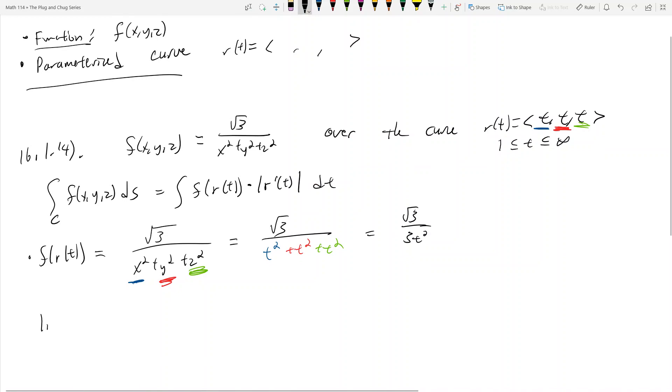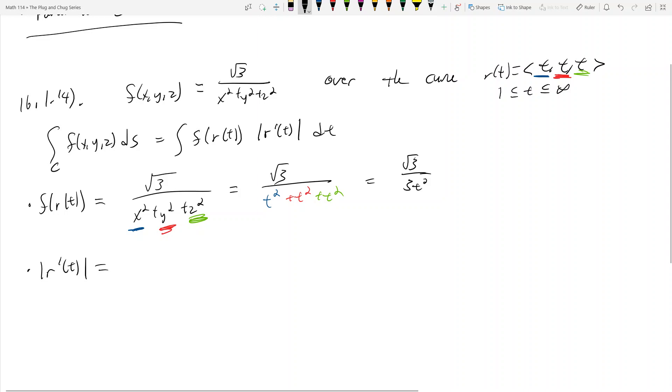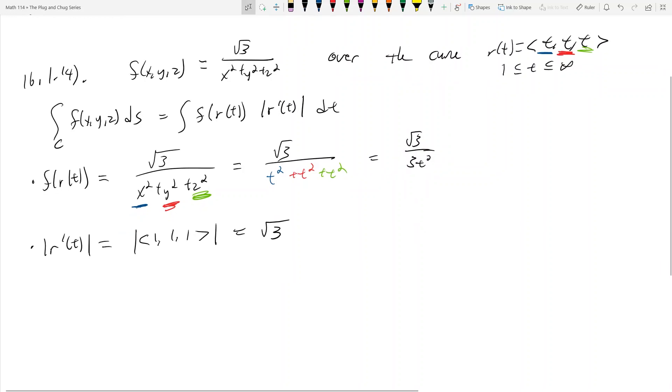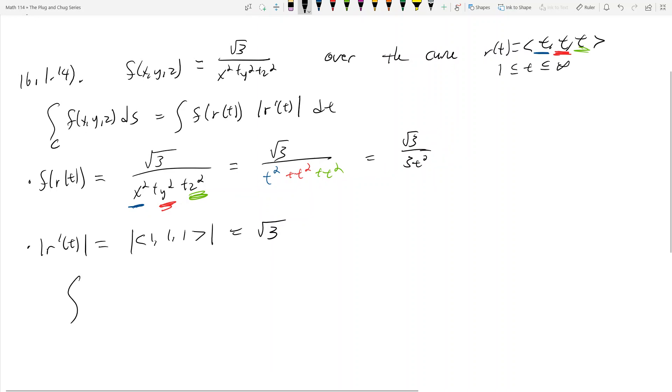And now we want to find the magnitude of r prime of t. r prime of t is equal to one, one, one. We take the derivative with respect to t, and now we've got to find the magnitude, and that's going to be equal to root three. So my integral, then, becomes the integral of root three over three t squared times root three dt, and where are my t bounds? My t bounds are given right here.